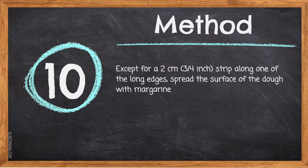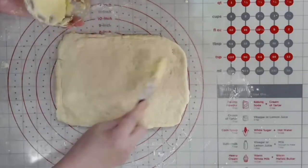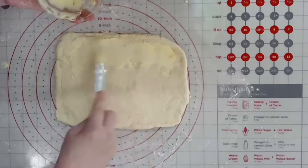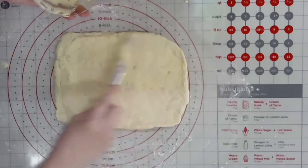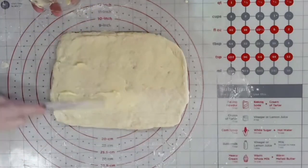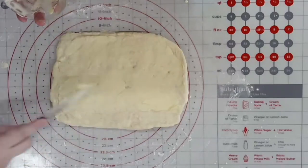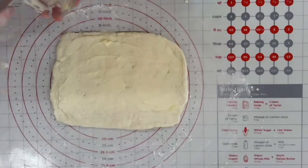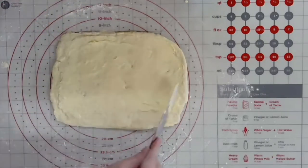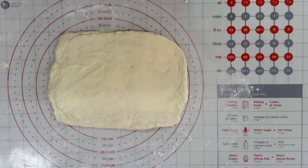Step 10: Except for a 2cm (3/4 inch) strip along one of the long edges, spread the surface of the dough with margarine. Make the margarine spreadable in the custard cup by rubbing it back and forth — if it's too hard it will rip the dough. Leave a 2cm gap along one long edge, because you need some uncovered dough to pinch together at the seam. If there's butter on that edge, the dough won't stick. Make sure the margarine is evenly spread so the filling is even throughout every pinwheel.